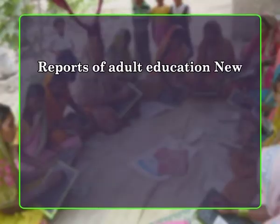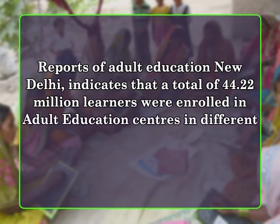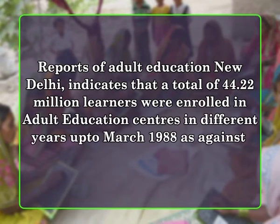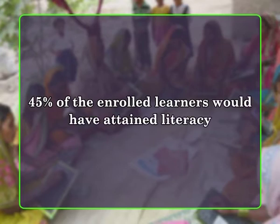An appraisal of the National Adult Education Program 1978, as seen through monitoring reports of Adult Education, New Delhi, indicates that a total of 44.22 million learners were enrolled in adult education centers in different years up to March 1988, against the target of 100 million. No figures are available on how many successfully completed the literacy program, but on the basis of sample evaluation it was estimated that 45% of enrolled learners would have attained literacy. Thus the level of achievement of the program in relation to the target set for it was only 20%, which is considered very low.